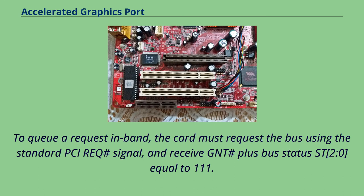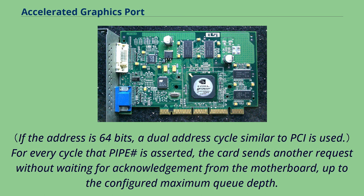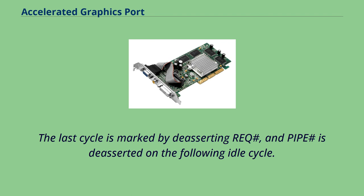To queue a request in-band, the card must request the bus using the standard PCI REQ# signal, and receive GNT# plus bus status ST[2:0] equal to 111. Then, instead of asserting FRAME# to begin a PCI transaction, the card asserts the PIPE# signal while driving the AGP command, address, and length on the CB[3:0], AD[31:3], and AD[2:0] lines respectively. For every cycle that PIPE# is asserted, the card sends another request without waiting for acknowledgement from the motherboard, up to the configured maximum queue depth. The last cycle is marked by deasserting REQ#, and PIPE# is deasserted on the following idle cycle.